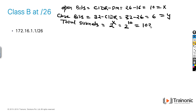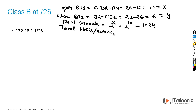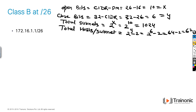Now we have to calculate total subnets: formula is 2 raised to X, which is 2 raised to 10, equal to 1024. Then we have to get total hosts per subnet: formula is 2 raised to Y minus 2, so 2 raised to 6 minus 2 is 64 minus 2, equal to 62.